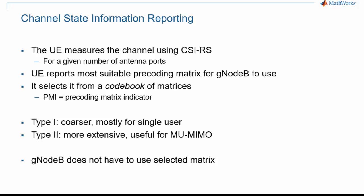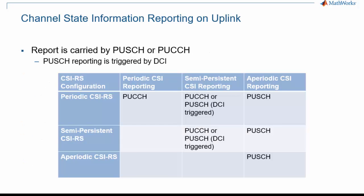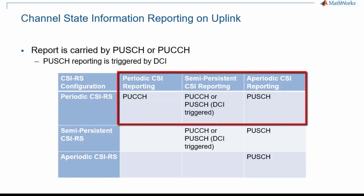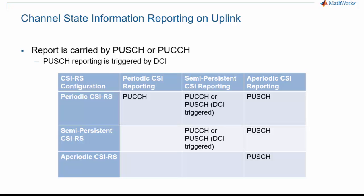Type 1 is considered adequate for single-user transmissions, when beamforming doesn't have to be quite as accurate. For multi-user transmission, however, the gNodeB will want to target each user more precisely and may request Type 2 feedback. Note that in either case, the gNodeB is not bound to use the suggested beamforming matrix for downlink transmission to this UE. CSI reports can be carried by the data or control channels, PUSCH or PUCCH, depending on the configuration and the complexity of the report. An aperiodic CSI-RS can only be reported with an aperiodic report, while reports for a periodic CSI-RS pattern can be of any type — periodic, semi-persistent, or aperiodic.